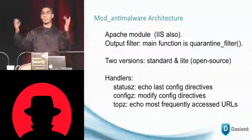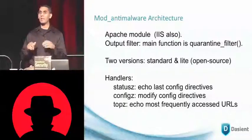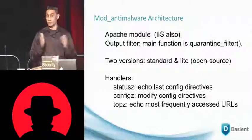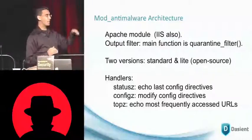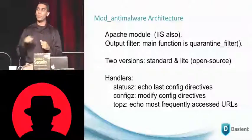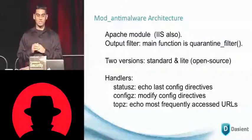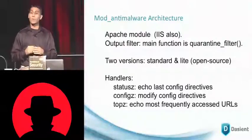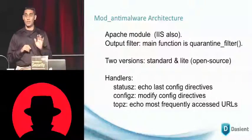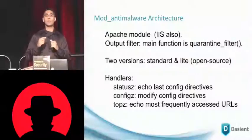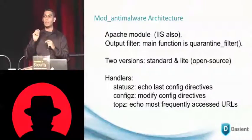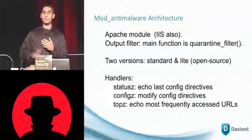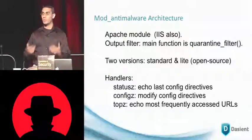If you have a domain like domain.com, when mod anti-malware gets installed, the module will respond to requests for domain.com/status_c, domain.com/config_c, or domain.com/top_c. Each of these handlers does something different. status_c echoes the last set of configuration directives sent to mod anti-malware. config_c allows the requester to send configuration directives to mod anti-malware. top_c echoes the most frequently accessed URLs at domain.com. The reason for that is you want to make sure you're monitoring the most popular URLs most frequently, because attackers have a strong incentive to affect the most popular pages to get the largest footprint for infecting users.